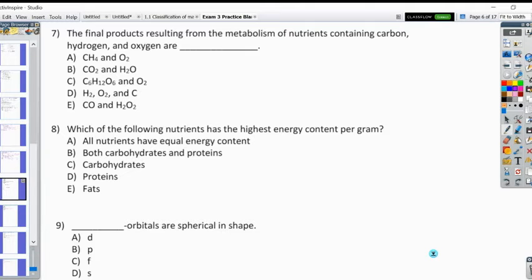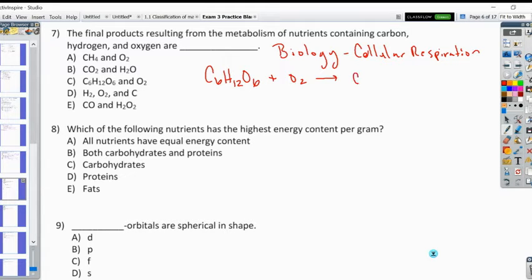Okay, number seven. The final products are from the metabolism of nutrients containing carbon, hydrogen, and oxygen. Maybe you remember back to biology and cellular respiration. So I just ate lunch and essentially our food, even though it's made out of different macronutrients, really comes down to our body wants glucose. And so our body reacts glucose with oxygen to produce carbon dioxide and H2O. That's where all our carbon dioxide and water vapor comes from our breath.